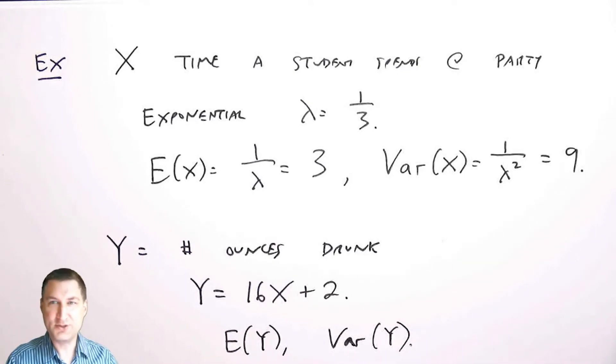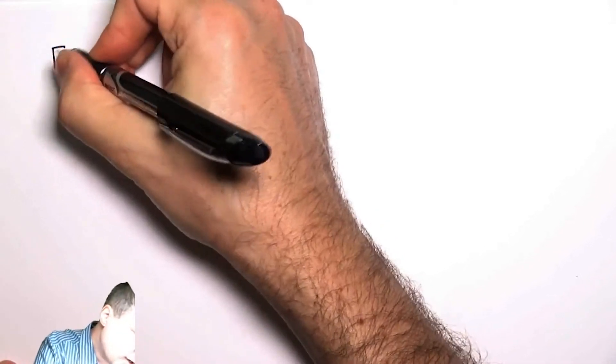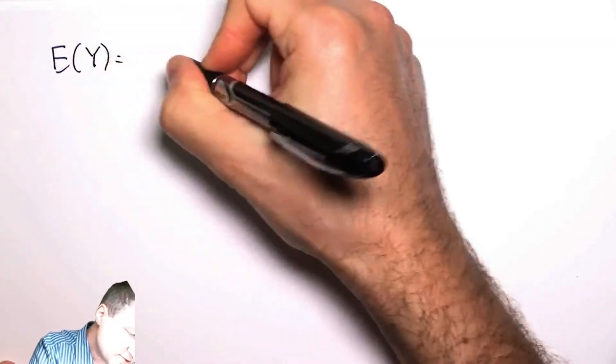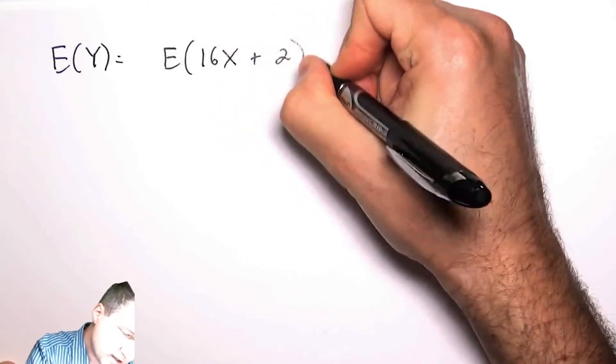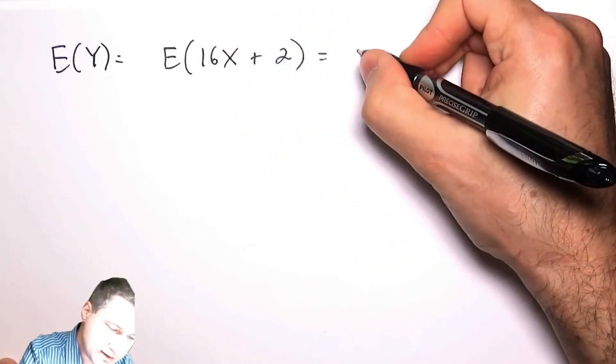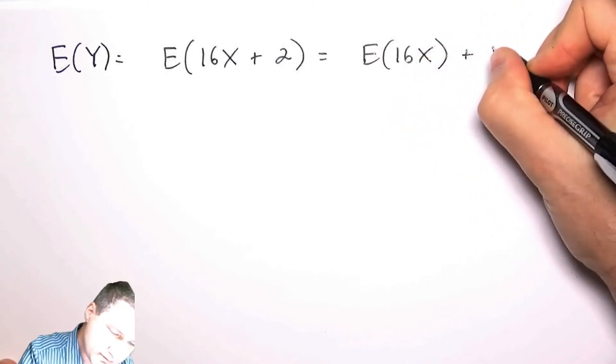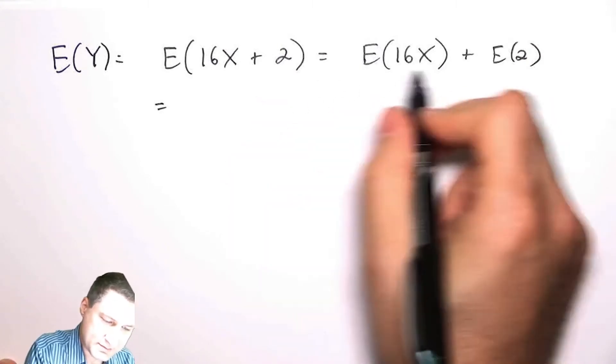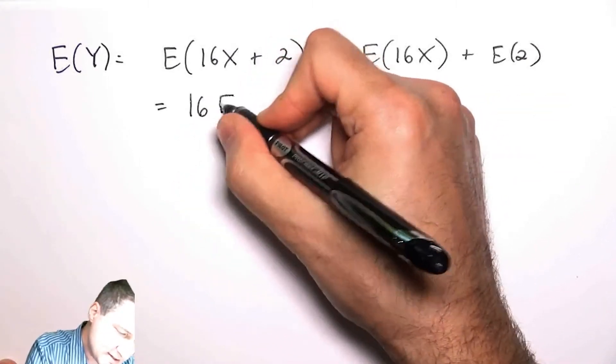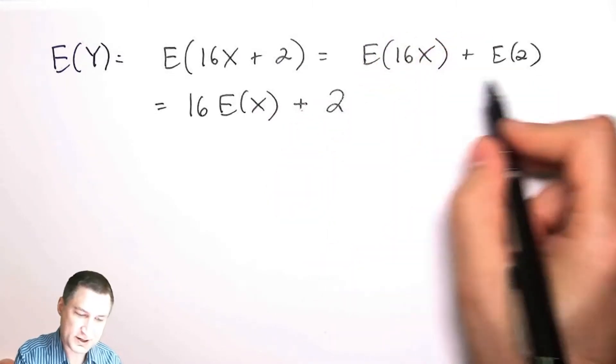We can do this without doing a lot of tedious integration. The expected value of Y is just the expected value of 16X plus 2, and we can take apart the expected value part by linearity so I can take apart the sum.